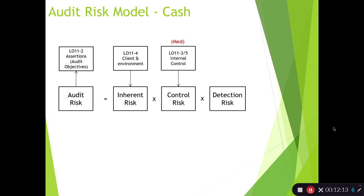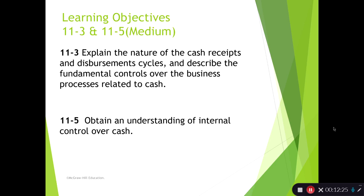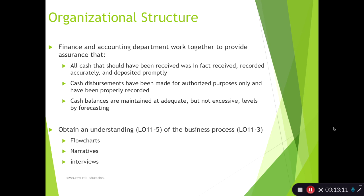Moving on to the next learning objective and component of the audit risk model — control risk. There are really two learning objectives here: 11-3 and 11-5, related to obtaining an understanding of internal control. Learning objective 11-3 is about making sure you understand the nature of the cash receipts and cash disbursements process and the controls related to it — that's really a student learning objective. And 11-5 is the actual step auditors perform to obtain an understanding of internal control over cash.